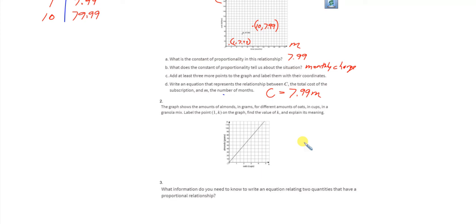Number two. This graph that we're looking at shows the amount of almonds in grams for different amounts of oats in cups. So we're comparing almonds to grams.